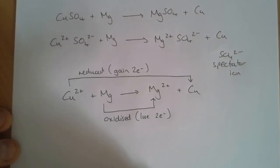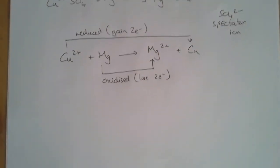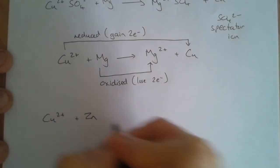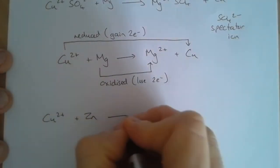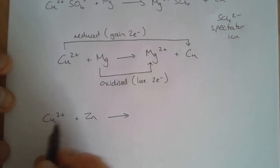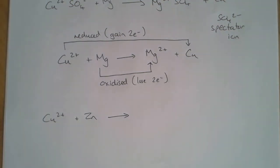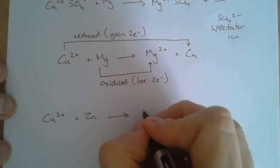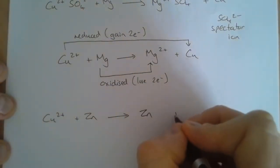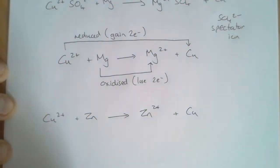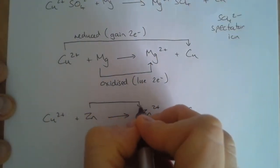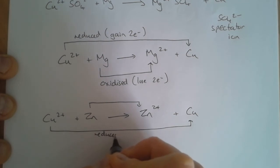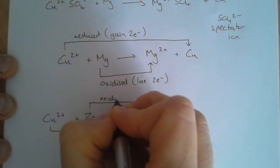Let's have a look at the reaction between Cu2+ and zinc in terms of an ionic equation. This could be copper chloride, copper sulfate, or copper nitrate — it doesn't really matter. Because zinc is more reactive than copper, zinc will reduce the copper and will itself become oxidized. So the copper has been reduced and the zinc has been oxidized.